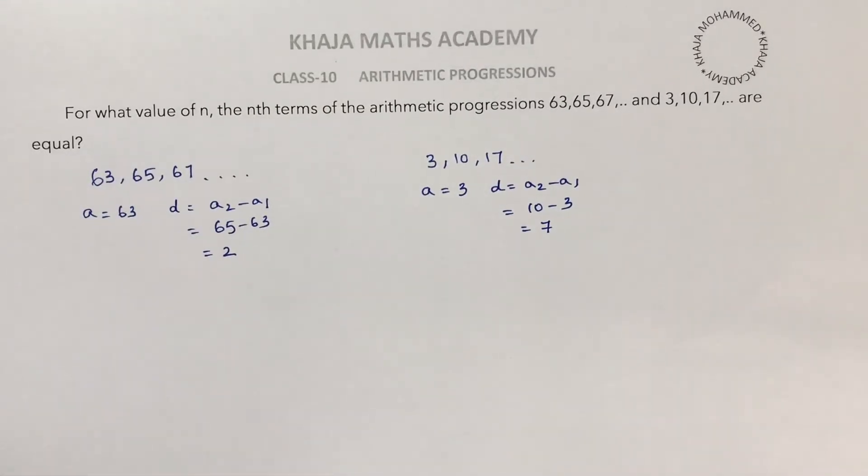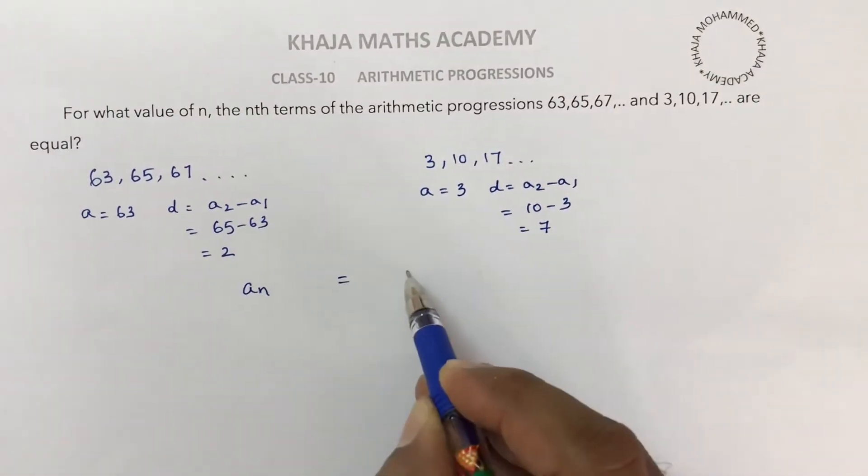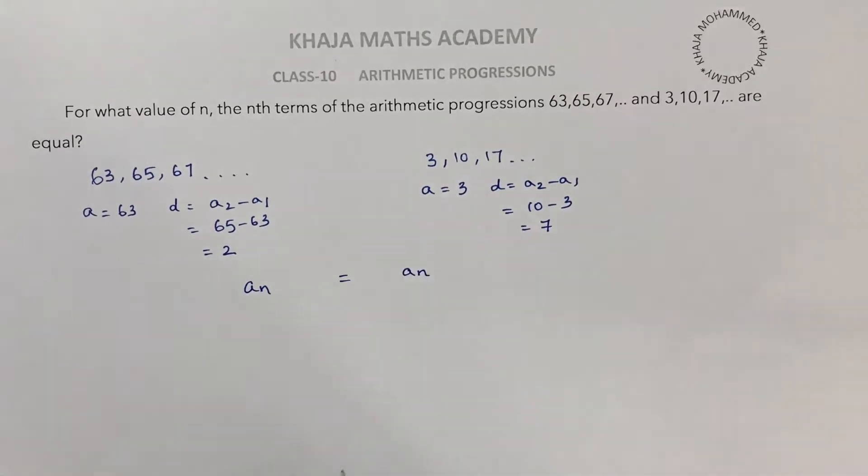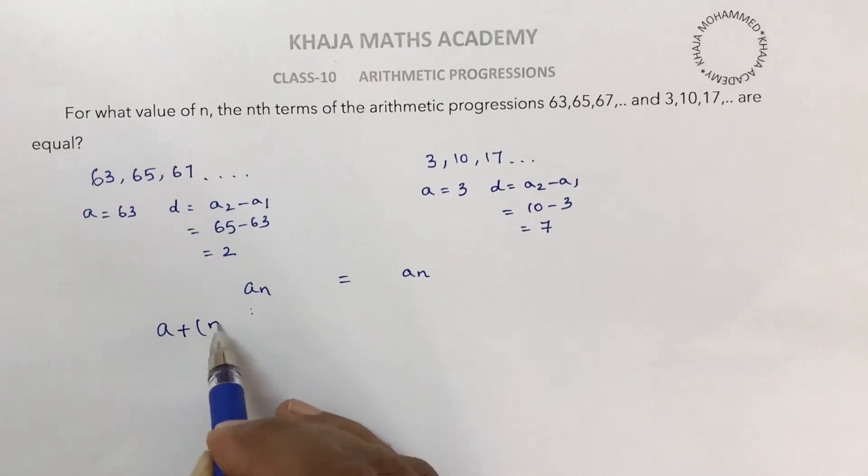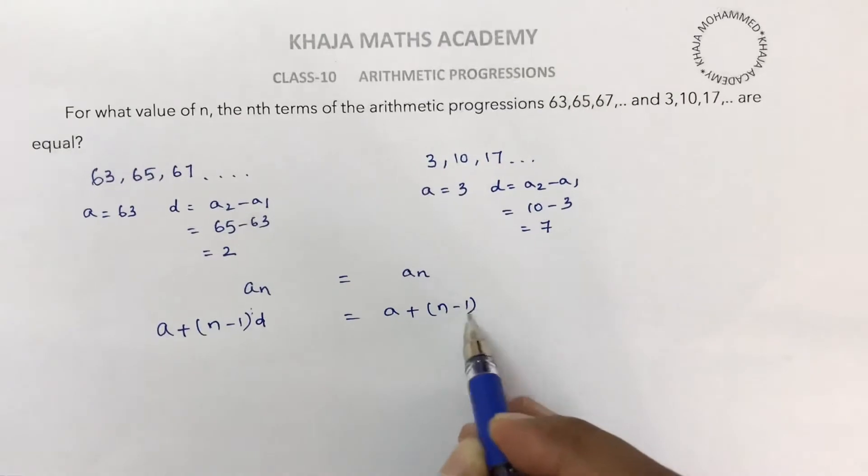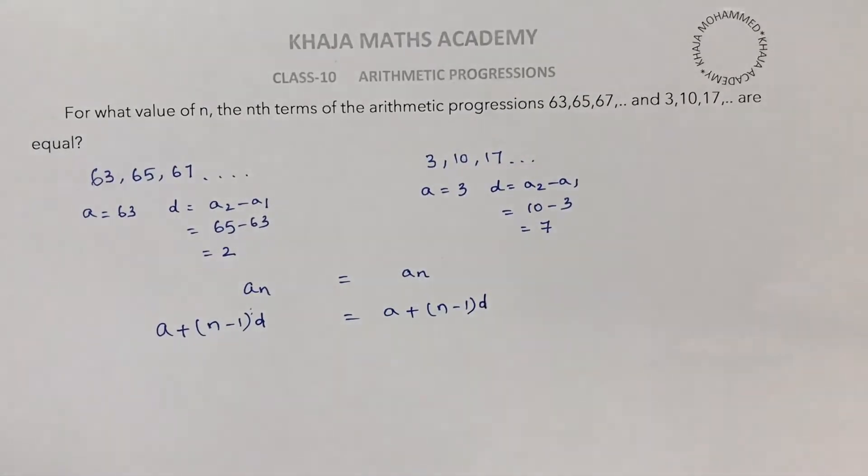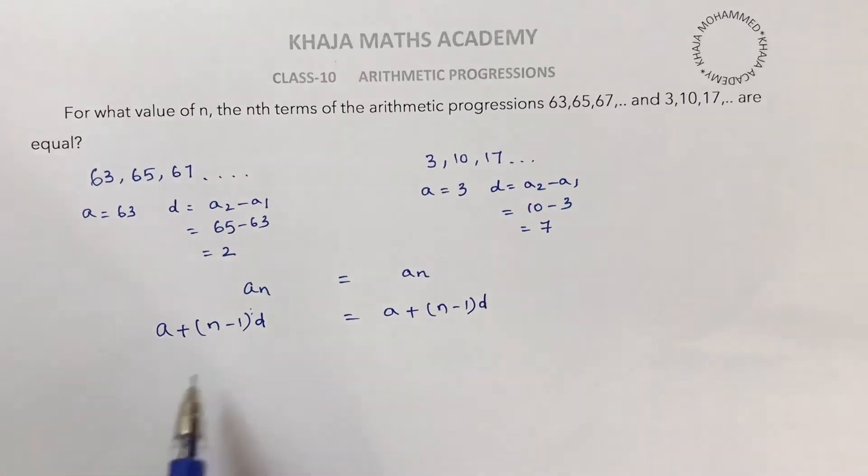For what values of n the nth terms of the arithmetic progressions are equal? nth term equals nth term, an equals an. The nth term of an AP formula is a plus (n minus 1) times d. We need to find n, so substitute the values of a and d.